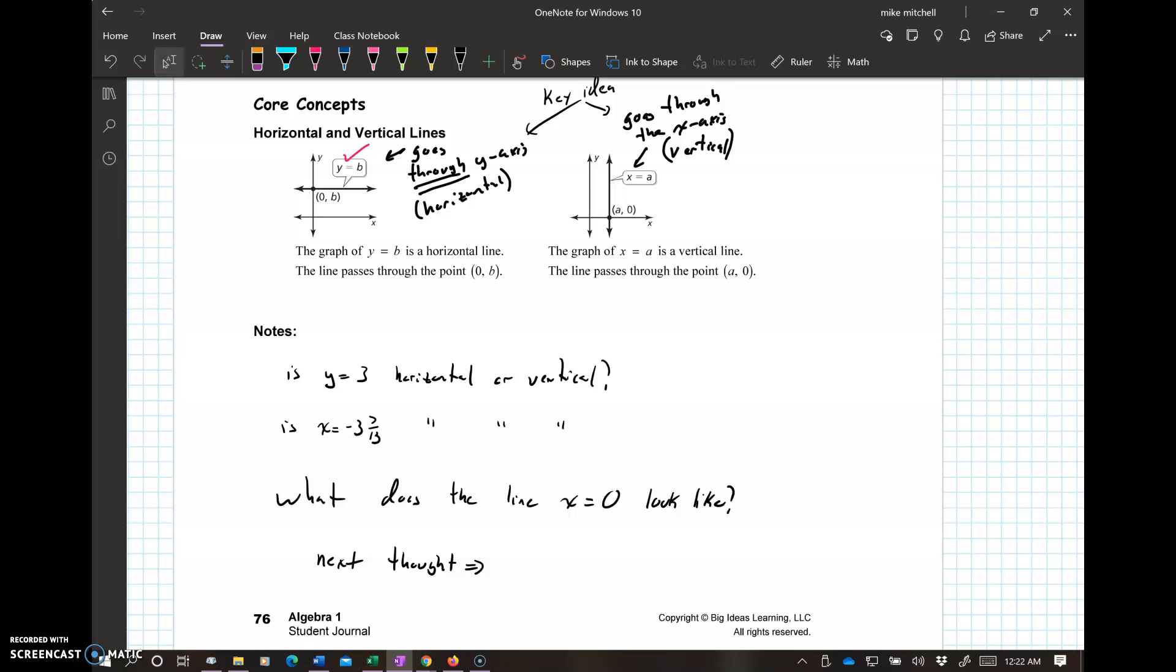Is y equal horizontal or vertical? Well, think about that one. You can go up here and look at it. Y equals b. That's an example of my horizontal. X equals negative 3 over 7 thirteenths. Well, don't let the numbers scare you. If it's x equals, actually remember that goes through the x-axis. That's going to go vertical.